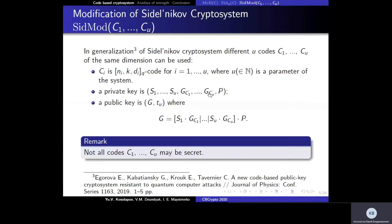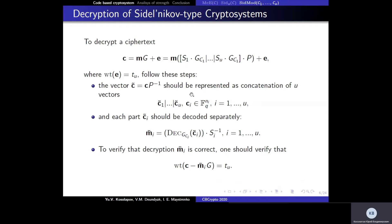In the general generalization of this system, U different codes may be used. So, in the secret key, there are U different generator matrices for different codes. Not all codes need to be secret in general. To encrypt a message, we take the cleartext multiplied by the public key and then add an error vector with a fixed weight.